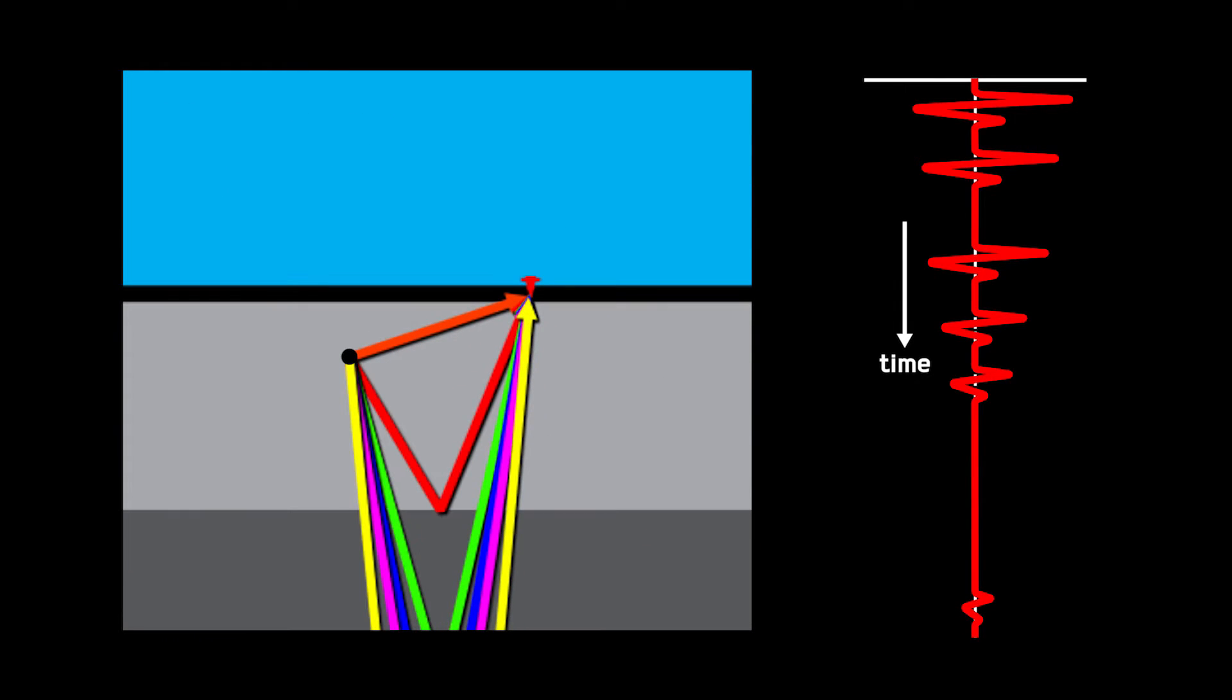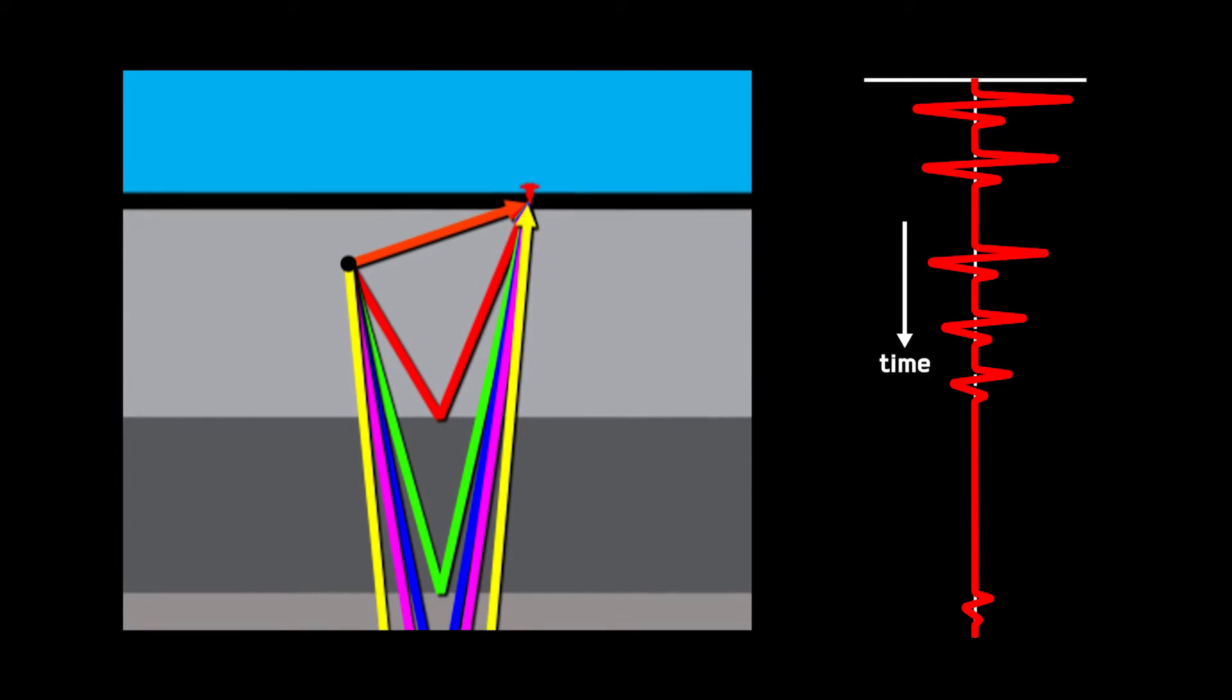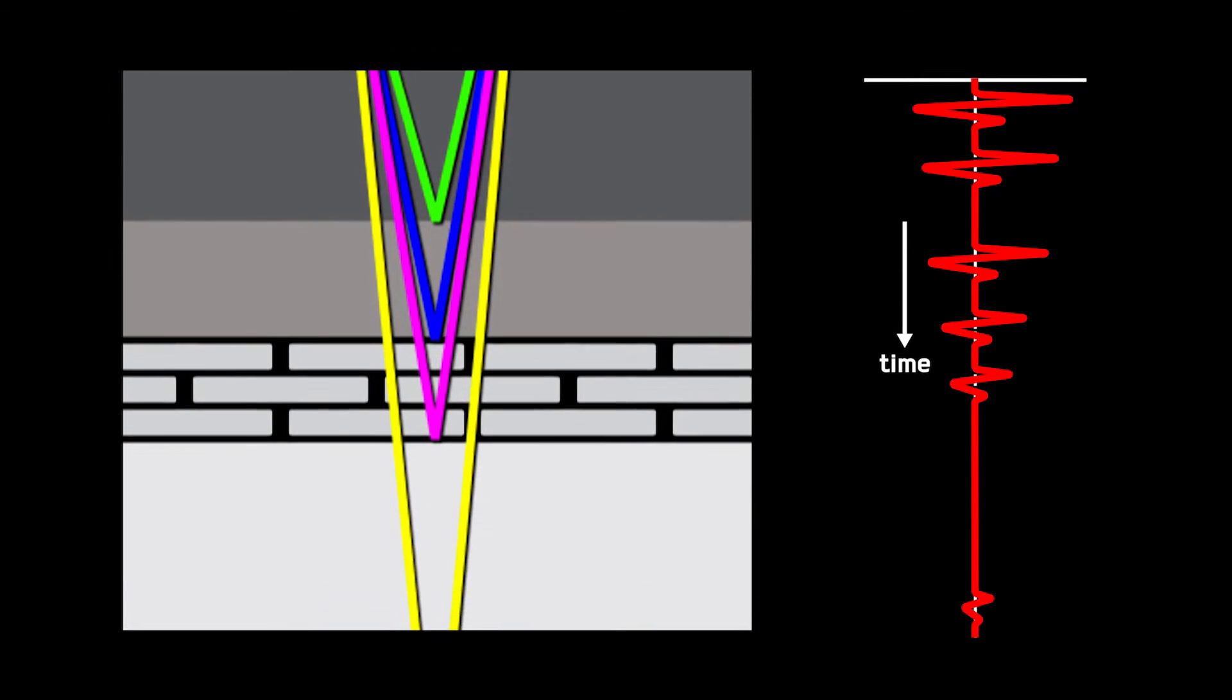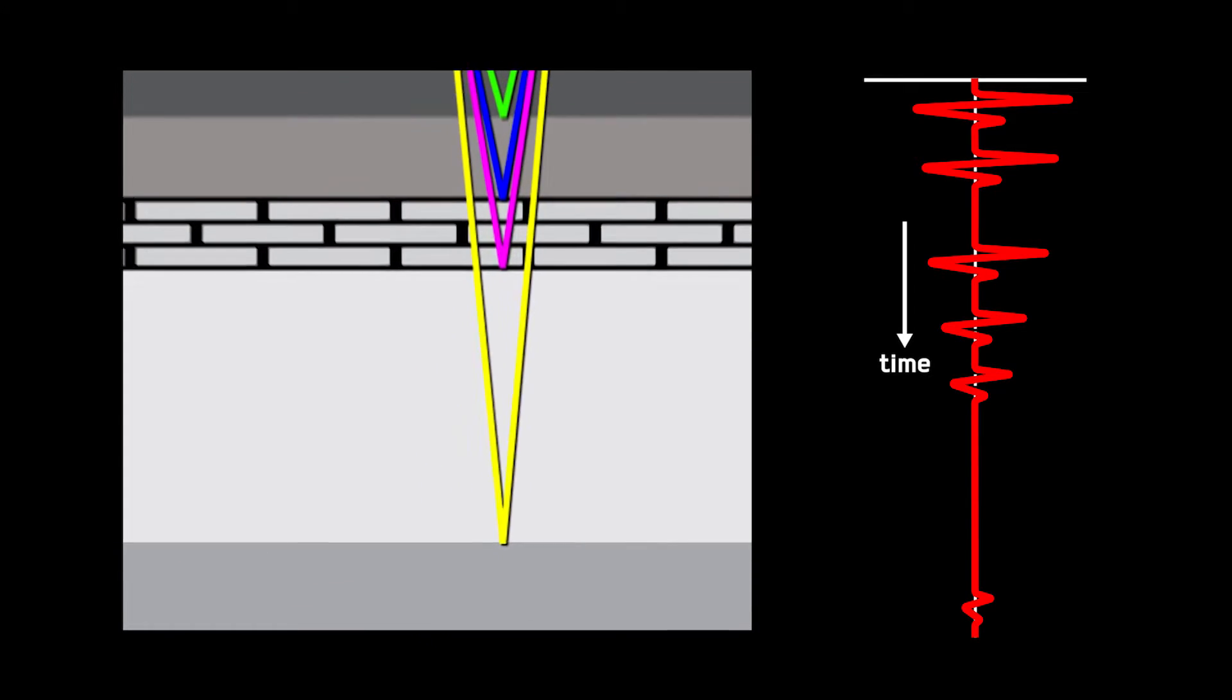First is the point where the explosion was set off. This is zero time, or the time break. Followed by the first break, which is the first wave to arrive at the geophone. And the remaining reflectors, which have traveled two ways, from source to reflector and back.